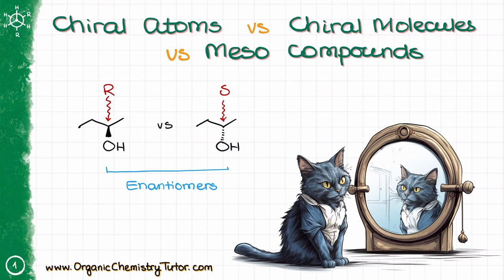If a molecule is chiral, it means that it has an enantiomer. And the fact that two molecules are enantiomers means that they are non-superimposable mirror reflections of each other. So these two definitions are very similar. However, if a molecule is chiral, it describes the molecule itself. If molecules are enantiomers, it describes the relationship between those two molecules.